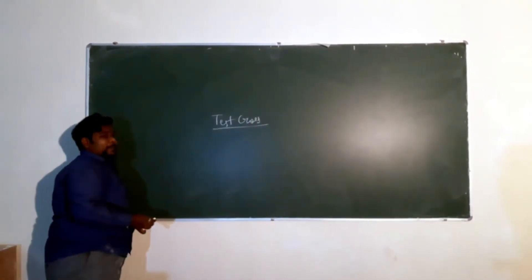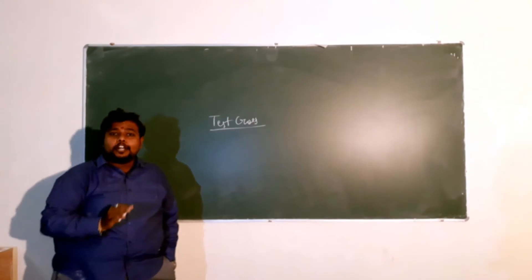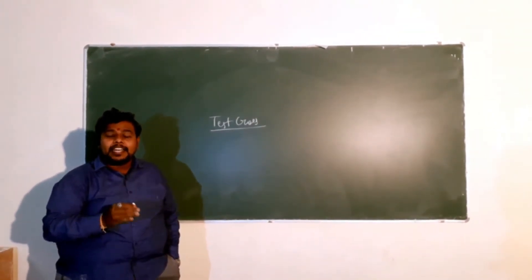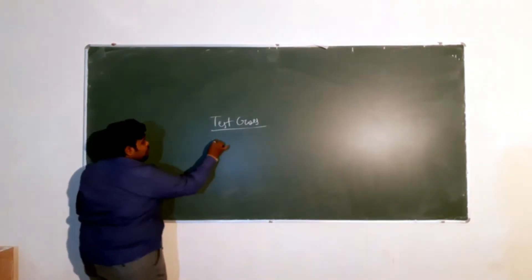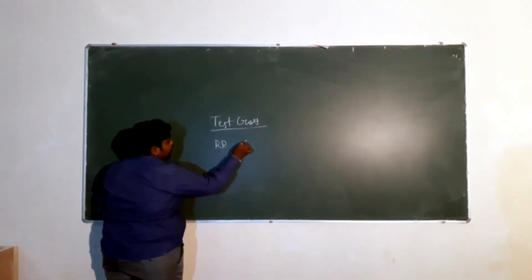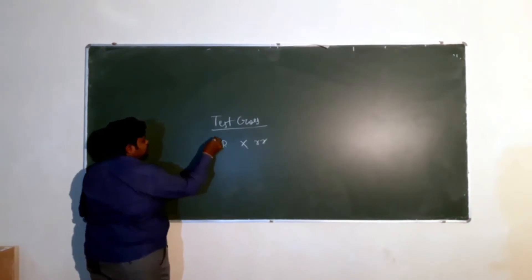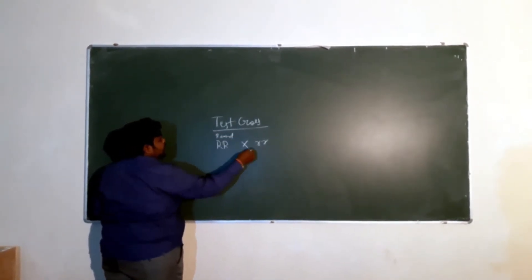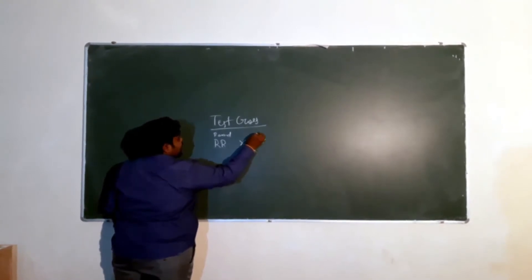So what do we mean by test cross? Test cross is a cross made between the F1 hybrid and the recessive parent. Let's take an example: capital R is crossed with small r. Capital R, capital R is responsible for the round character, and small r, small r is responsible for the wrinkled character.